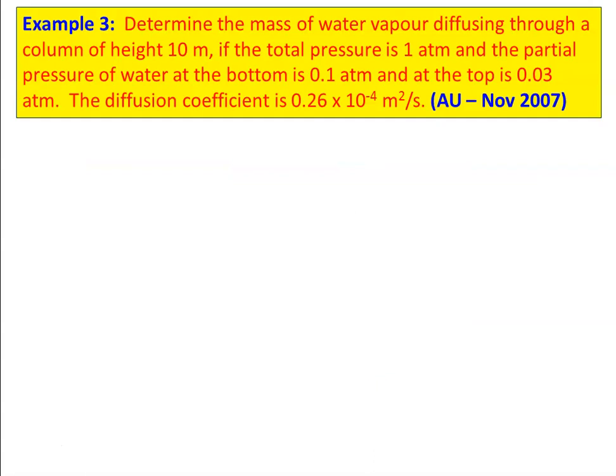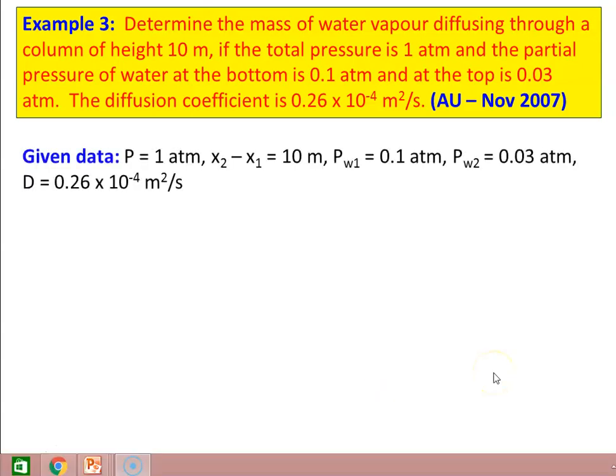We take the third example from November 2007 question paper. Determine the mass of water vapor diffusing through a column height of 10 meter, if the total pressure is 1 atmosphere, the partial pressure of water at the bottom is 0.1 atmosphere, and at the top is 0.03 atmosphere. The diffusion coefficient is 0.26 into 10 power minus 4 meter square per second. Given: pressure equal to 1 atmosphere, x2 minus x1 equal to 10 meter, partial pressure at bottom 0.1 atmosphere, at top 0.03 atmosphere.